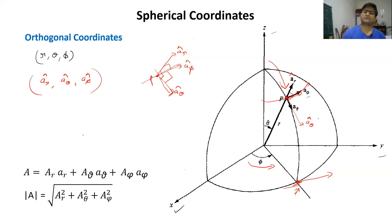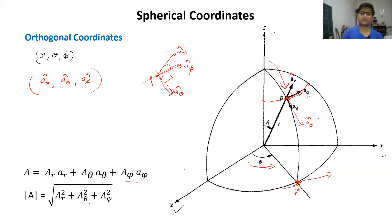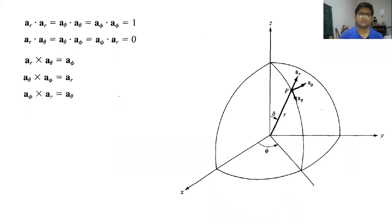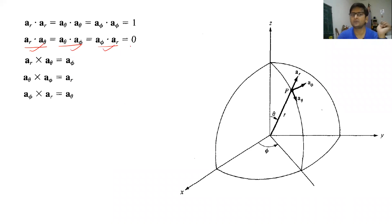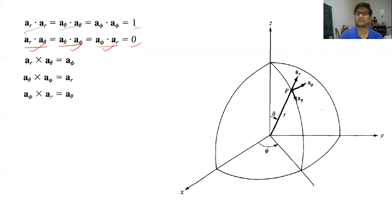As in the previous cases of Cartesian and cylindrical coordinates, in spherical coordinates we can represent any vector A as: A_r·ar + A_theta·a_theta + A_phi·a_phi. Since all three coordinates are orthogonal, the magnitude of A will be the square root of the sum of squares of each individual magnitude. Since all unit vectors ar, a_theta, and a_phi are perpendicular to each other, the dot products ar·a_theta, a_theta·a_phi, and a_phi·ar are all zero. Each unit vector dotted with itself equals one since these are unit vectors.